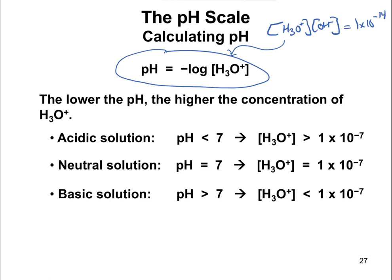So pH is going to be negative log of the H3O+ concentration. When the H3O+ is 1 times 10 to the negative 7, the pH is going to be exactly 7. If the H3O+ concentration is greater than 1 times 10 to the negative 7, it's going to be more acidic. The pH is going to be less than 7, so low pH is acidic. And when the pH is less than 1 times 10 to the negative 7, that means it's going to be a basic solution with pH greater than 7.